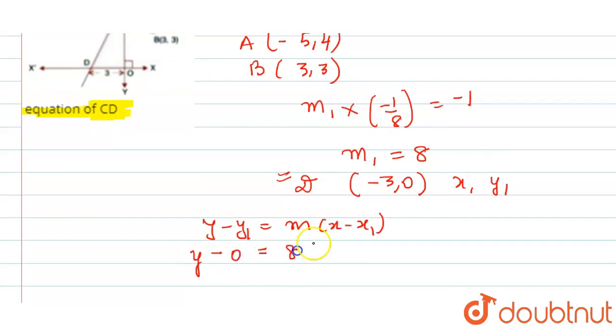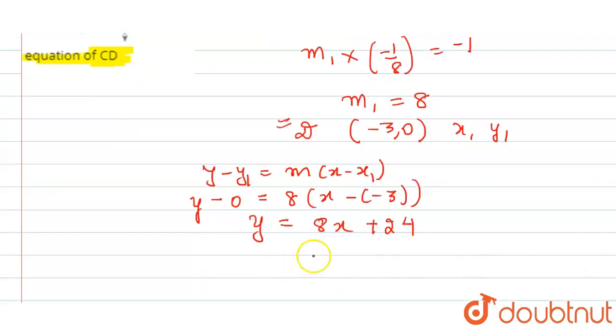Simplifying, it becomes y equals 8x plus 24. So the equation will become 8x minus y plus 24 equals 0. Thank you.